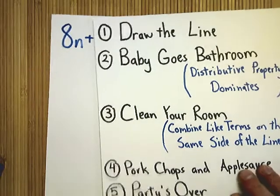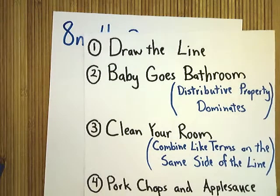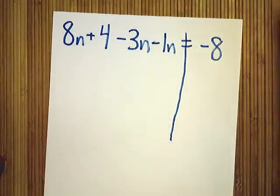So, first step is to draw the line. I did it. The second step is Baby Goes Bathroom. There's no distributive property, as you can see, so no need to worry about that.